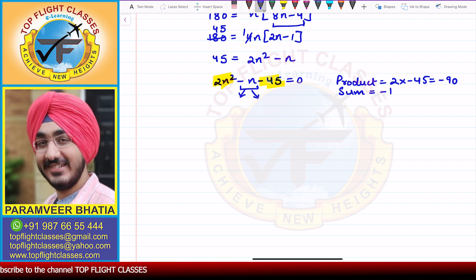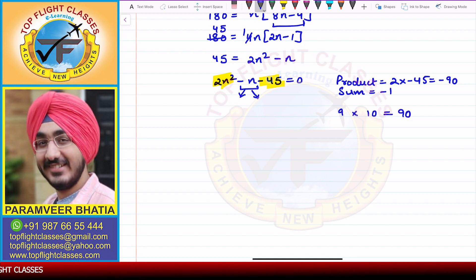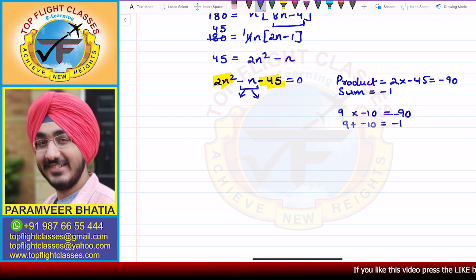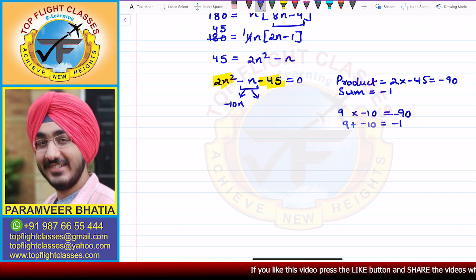We know that 9 times 10 is 90, so 9 times minus 10 will be minus 90, and 9 plus minus 10 will equal minus 1. So the two terms are minus 10N and 9N.